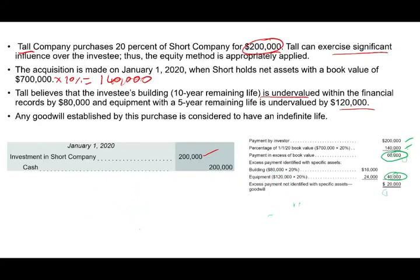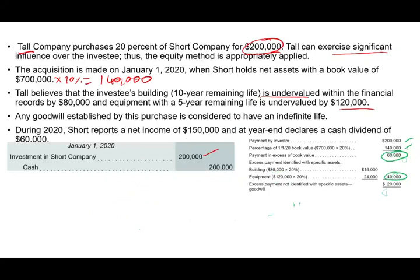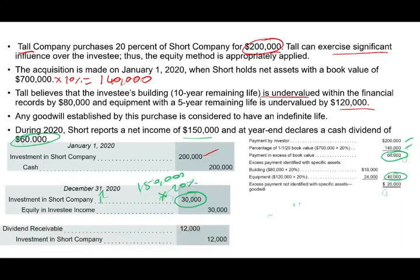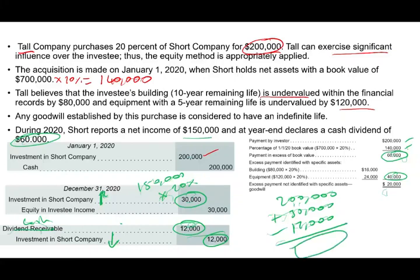Short Company had income of $150,000 and declared dividends of $60,000. Under the equity method, we increase our investment by $30,000 ($150,000 × 20%). They paid dividends of $60,000, so $60,000 × 20% = $12,000: debit Dividend Receivable (or Cash) and credit Investment. Notice: net income brings the investment up, dividends bring it down. The value of the investment is therefore: $200,000 + $30,000 − $12,000.